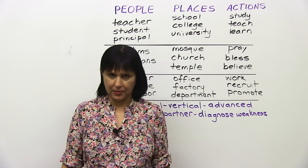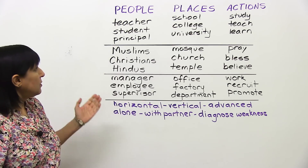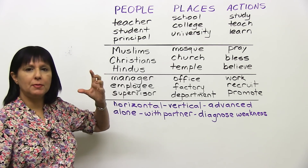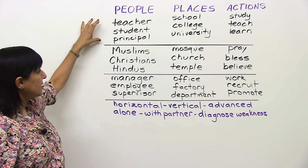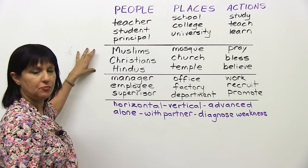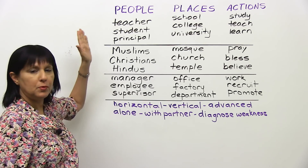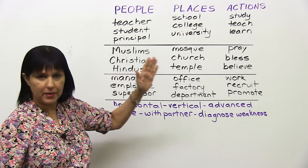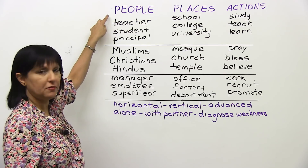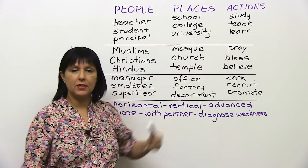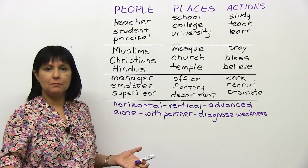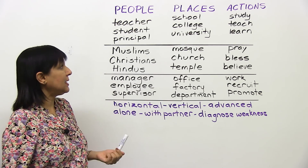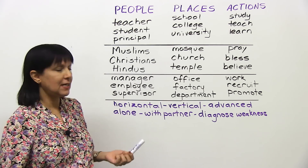There are many ways to improve your active vocabulary. Today I'm going to show you one way. What I've done is written a lot of vocabulary on the board. What I'd like you to do is take a theme — a vocabulary theme — such as education, religion, or business. Then you divide it into categories like people, places, and actions. For example, in education: people — teacher, student, principal; places — school, college, university; actions — study, teach, learn.